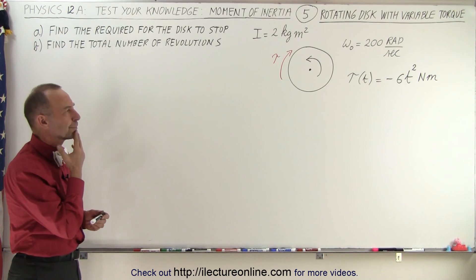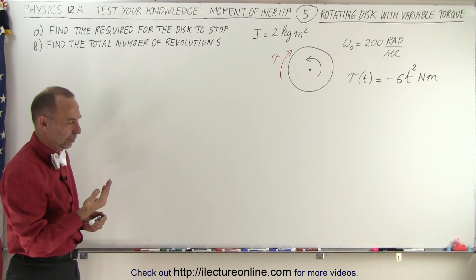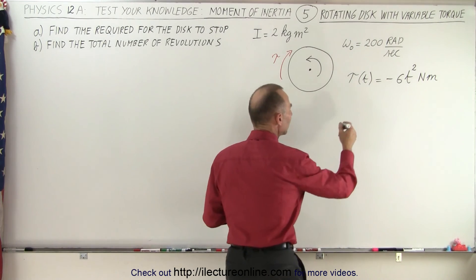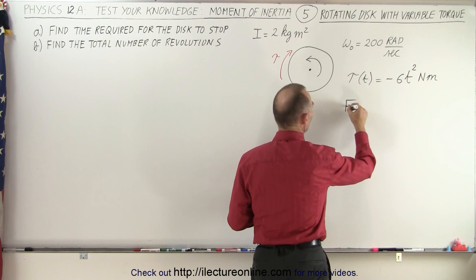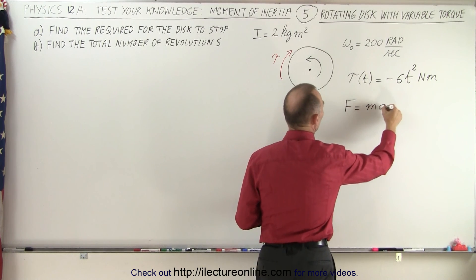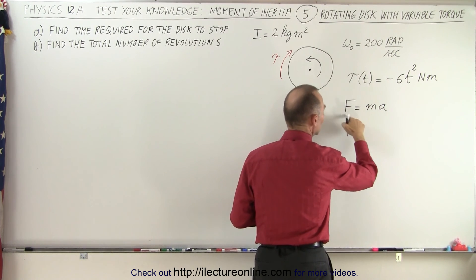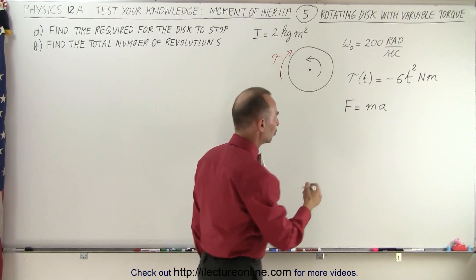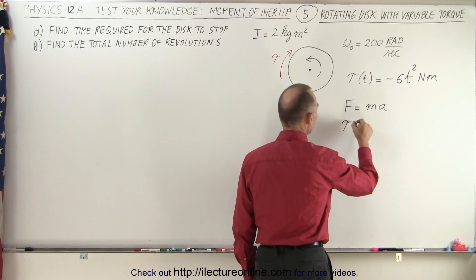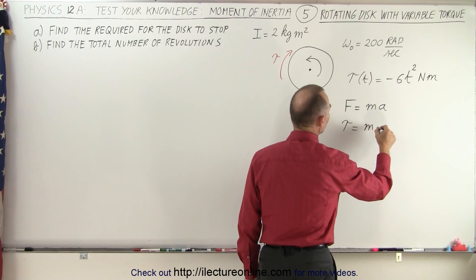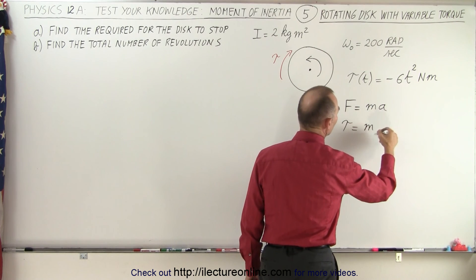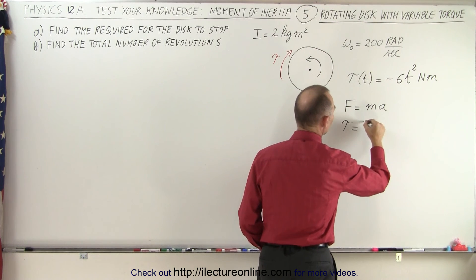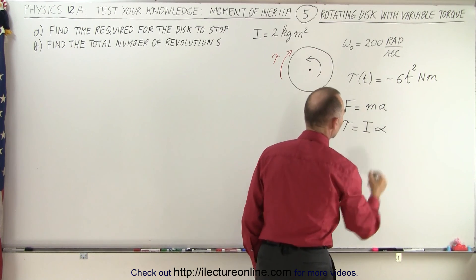So how do we do that? Since the torque is variable, let's start with the equation F = ma and find the rotational equivalent. F = ma is what we need for linear acceleration and a force applied for that linear acceleration. But for rotational motion, the equivalent equation is that the torque is equal to the moment of inertia times the angular acceleration.